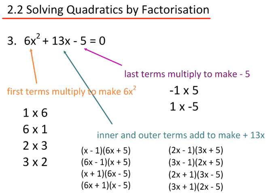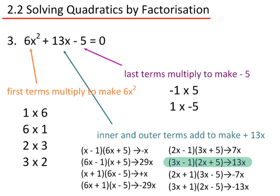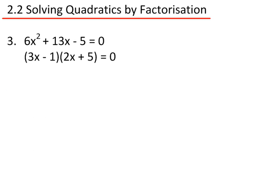Putting the inner and outer terms together gives these answers. I'm looking for plus 13x, so the brackets that I need are 3x minus 1 and 2x plus 5. So 3x minus 1 in brackets, times 2x plus 5 in brackets, equals 0.